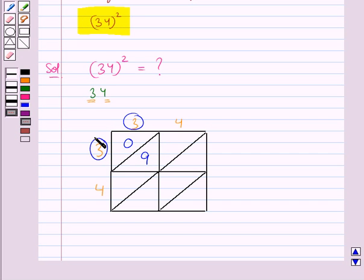Next we consider 3 and this 4. We multiply 3 and 4, we get 12. Now since 12 is a 2 digit number, we write the tens digit of the number 12, that is 1, above the diagonal of this sub square and the ones digit of the number 12, that is 2, below the diagonal of this sub square.